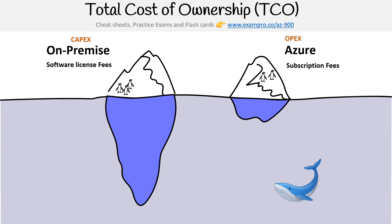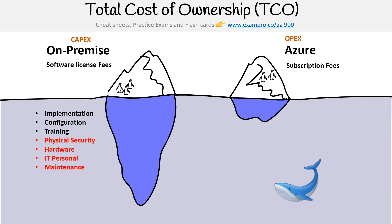But when we take in the total cost of ownership — all the costs involved — we're going to see a very different picture. On the left-hand side, if you are on premise, you have to deal with the implementation, the configuration, and the training, but you also have to deal with the physical security of your building, pay for the hardware, pay for the IT personnel, and deal with maintenance. On the right-hand side, in the cloud, you still have to do implementation, configuration, and training, but that's about it.